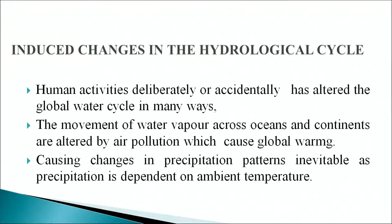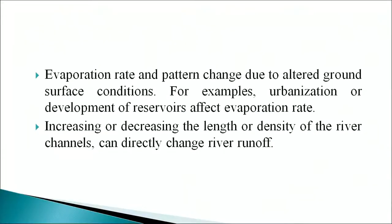Human activities, deliberately or accidentally, have altered the global water cycle in many ways. Air pollution causes global warming, which alters the movement of water vapor across oceans and continents, causing changes in precipitation patterns, since precipitation is dependent on ambient temperature. Evaporation rates and patterns change due to altered ground surface conditions — for example, urbanization or development of reservoirs affects evaporation rate. Increasing or decreasing the length or density of river channels can directly change river runoff.